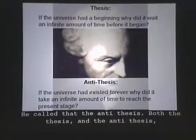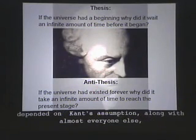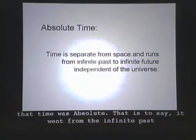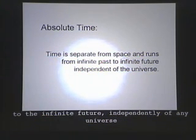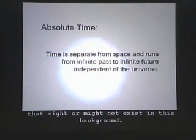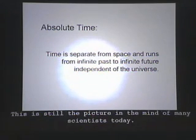Both the thesis and the antithesis depended on Kant's assumption, along with almost everyone else, that time was absolute. That is to say, it went from the infinite past to the infinite future, independently of any universe that might or might not exist in this background. This is still the picture in the mind of many scientists today.